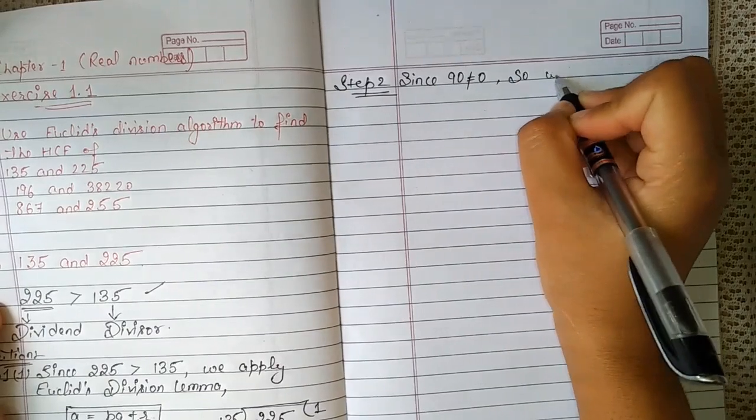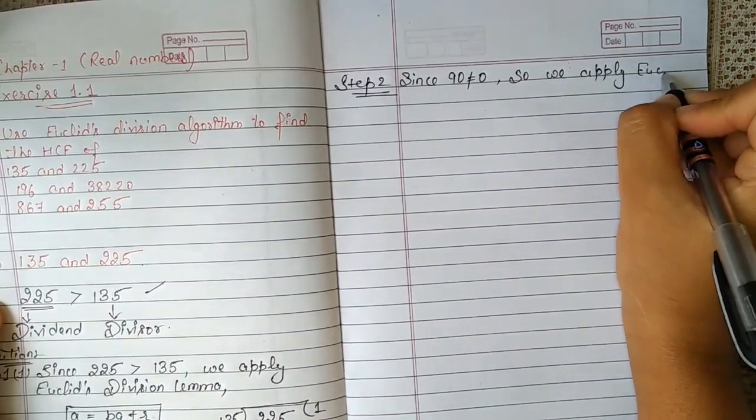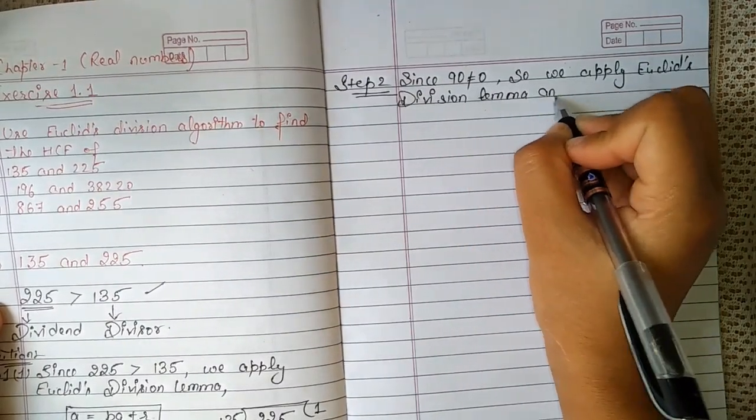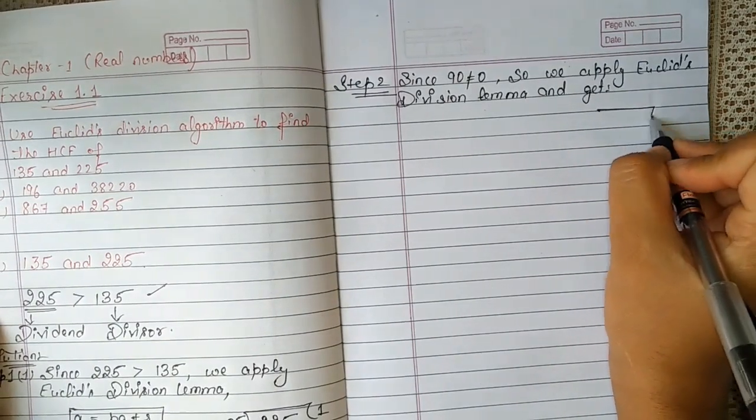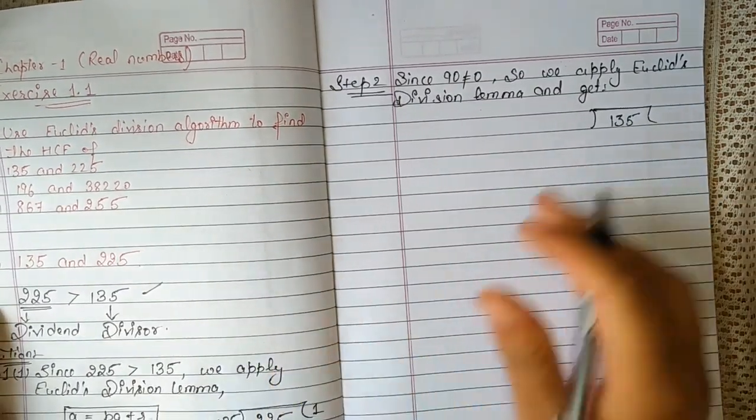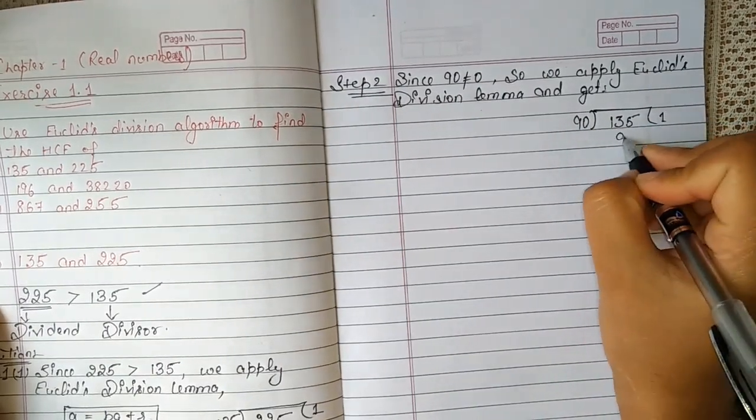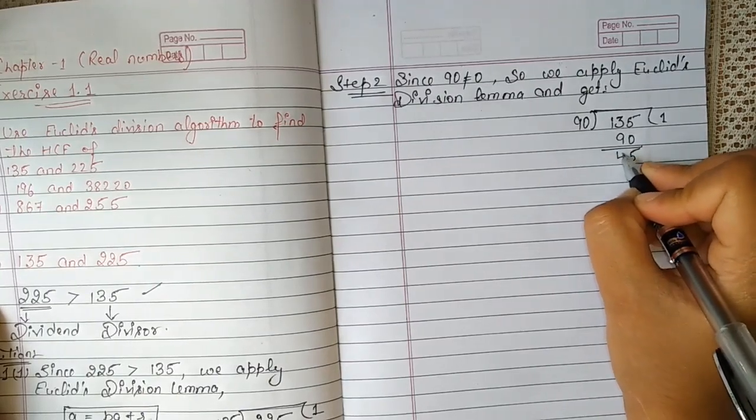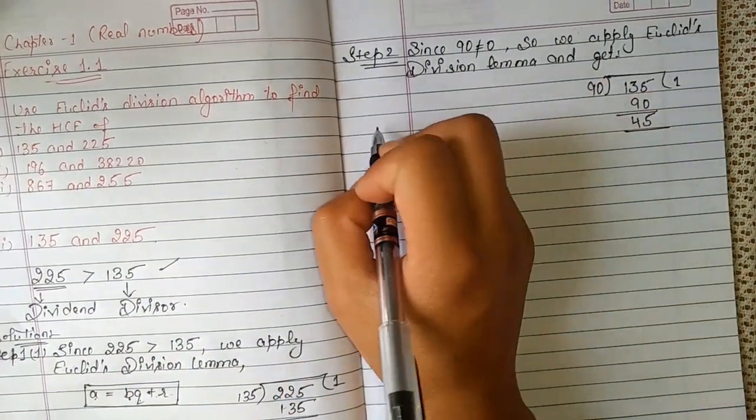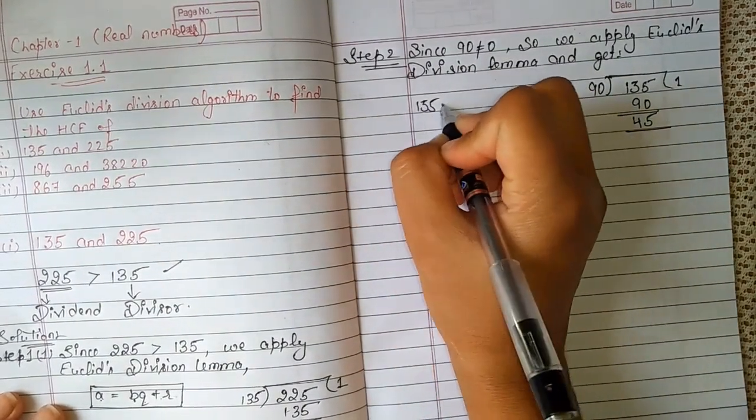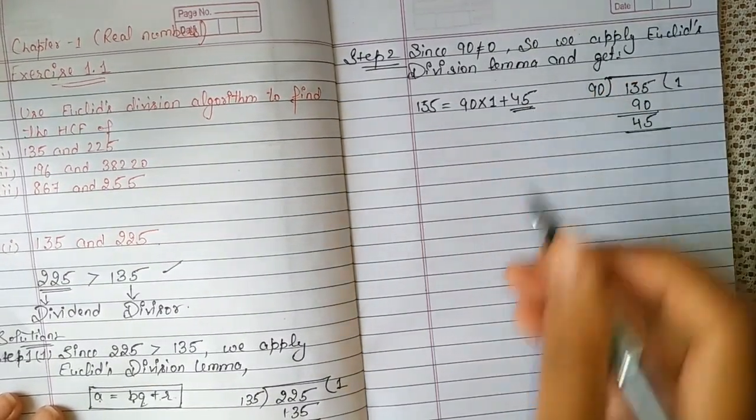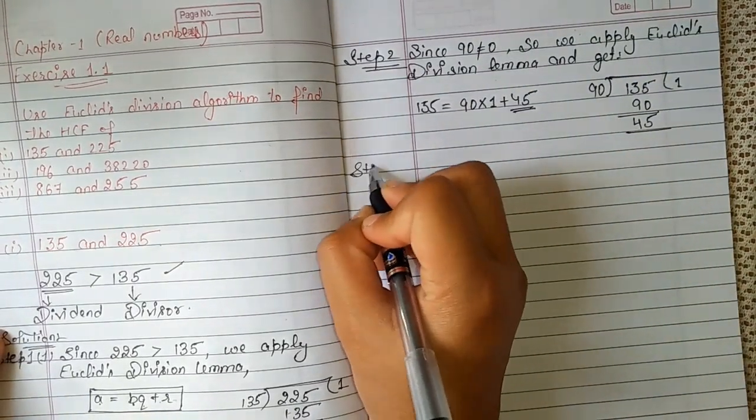Now step 2: the divisor becomes the dividend and the remainder becomes the divisor. Since remainder 90 is not equal to 0, we apply Euclid's Division Lemma again. Now 135 is your dividend and 90 is divisor. According to Euclid's Division Lemma, 135 is equal to 90 multiplied by 1 plus remainder 45. Again we have 45, not 0 here.